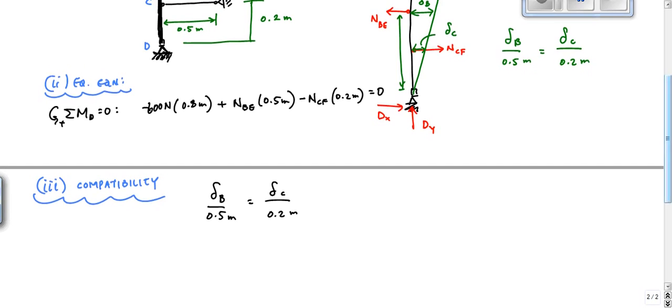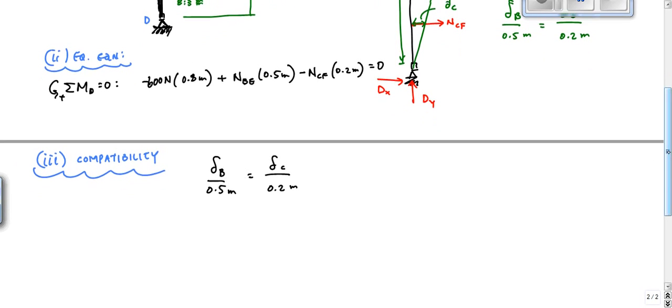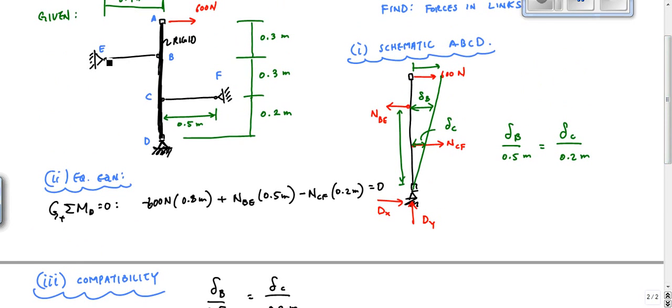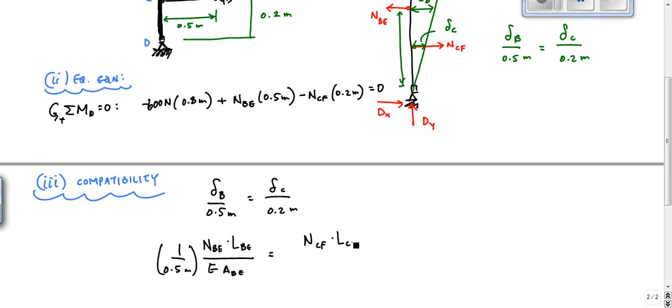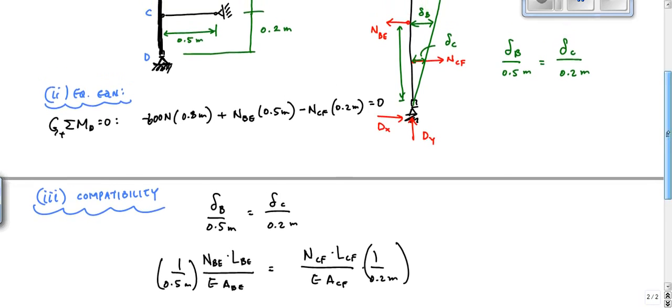And now what you would normally proceed to do having this relationship, you would probably go, okay, that deformation in B is the same as if I had this deformation in BE. And you would say, oh, okay, that is N_BE, the force in BE times the length of BE over EA_BE times 1 over 0.5 meters, and you would proceed to do this and you would be wrong. You would proceed to do this, you would be wrong. And the reason that there would be an error here is that you're missing a negative sign.